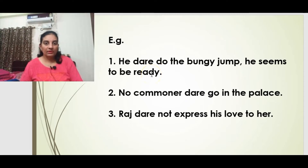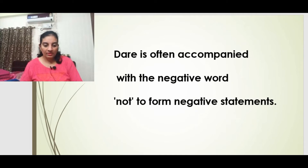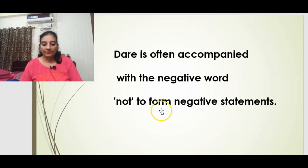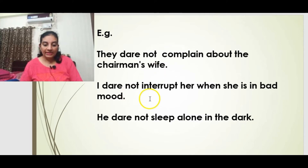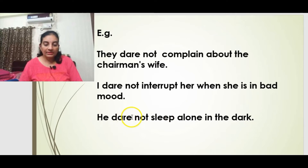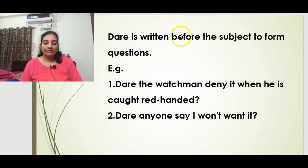If dare is used as a main verb, then we can use the 'to' infinitive. Dare is often accompanied with 'not' to form negative statements. Examples: 'They dare not complain about the chairman's wife.' 'Who dares to complain?' 'I dare not interrupt her when she is in a bad mood.' 'He dare not sleep alone in the dark because he is very scared.'